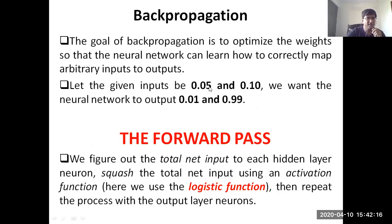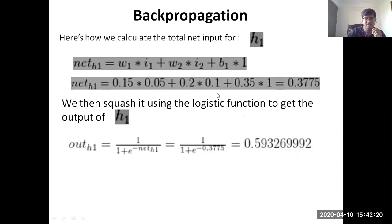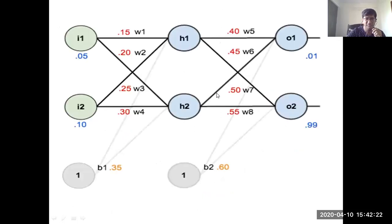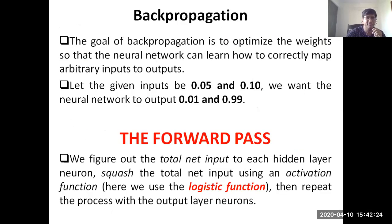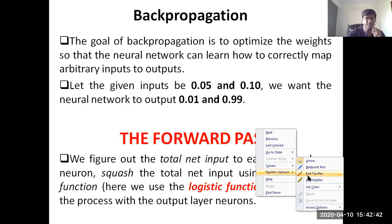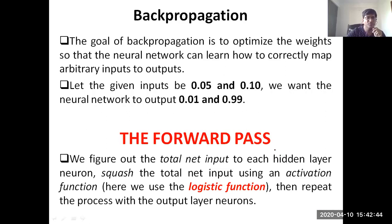The problem is: given the inputs 0.05 and 0.10 with corresponding targets 0.01 and 0.99, the first phase is the forward phase. Mind you, we are using the logistic (sigmoid) function as discussed in the previous part.